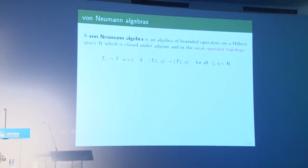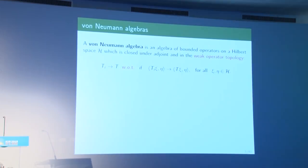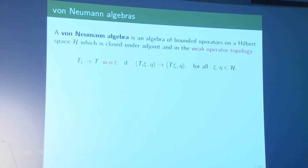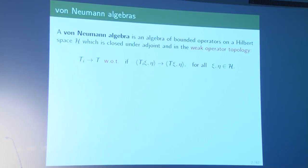A von Neumann algebra is an algebra of bounded linear operators on a Hilbert space, which is closed under the adjoint and also closed in the weak operator topology. This is the topology of pointwise convergence of matrix coefficients — it's the weakest topology you can really write down. One way to build von Neumann algebras is to take a collection of operators, form the algebra they generate, and then take the closure in the weak operator topology.